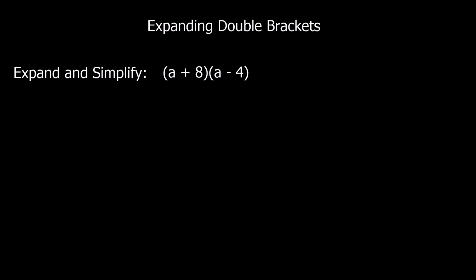Here we've got another expand and simplify question. The only difference is we've got a negative in the second bracket. We're going to follow the same process — multiply both of the terms in the first bracket by both of the terms in the second bracket. We'll start with a times a, which is a squared. Then a times minus 4 — that's minus 4a.